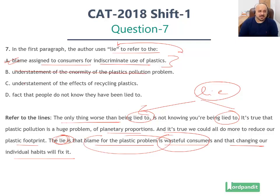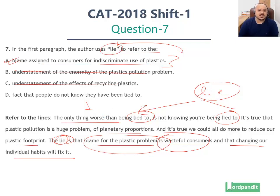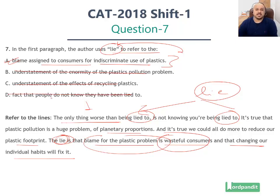Option C, understatement of the effects of recycling plastics, does not fit. Option D, the fact that people do not know that they have been lied to — this is being told in the first introductory line of the passage. But the word 'lie' does not refer to the fact that people do not know they are being lied to. It actually refers to the fact that the blame for plastic pollution is wasteful consumers. So the answer to the question is option A and not option D.